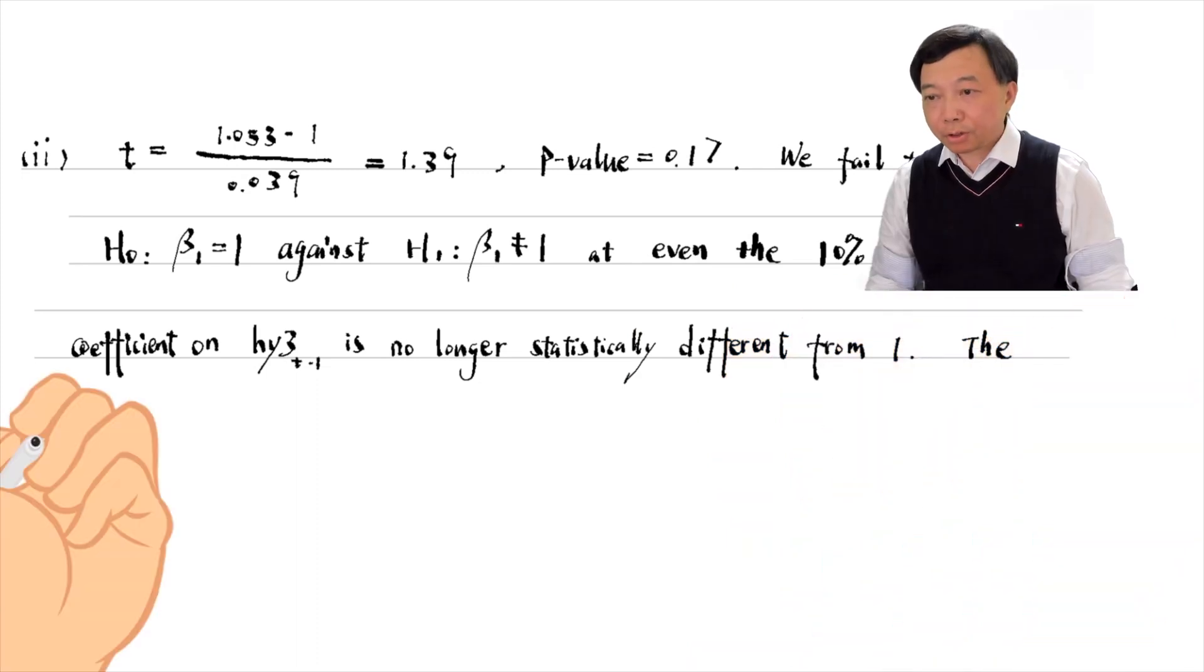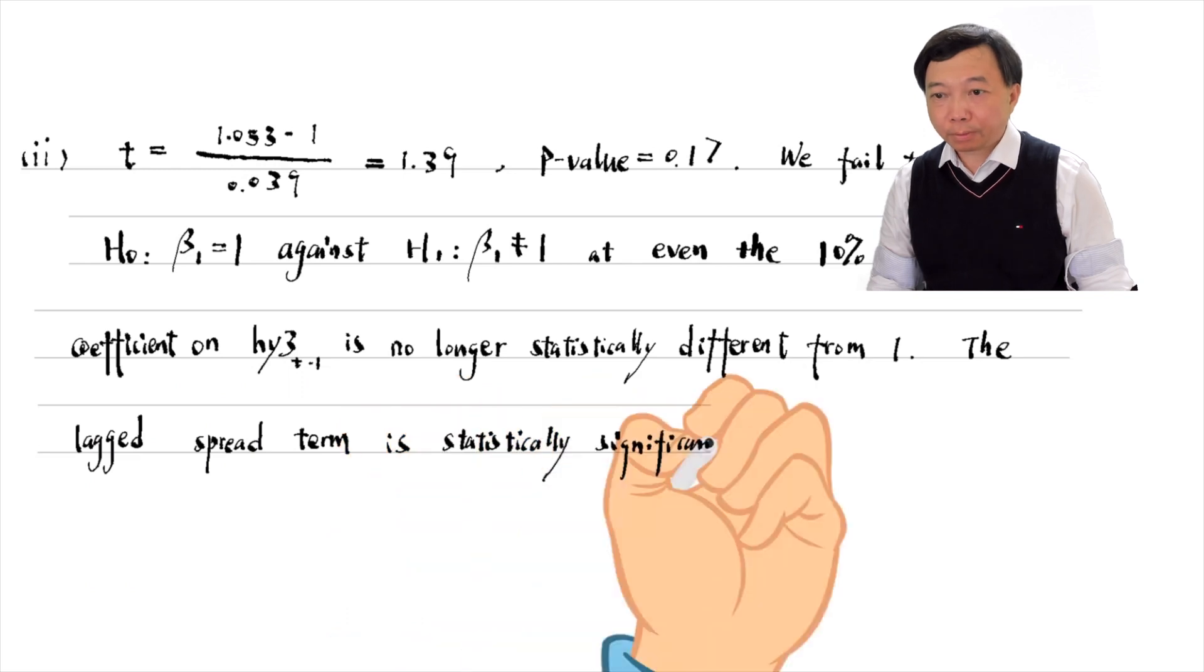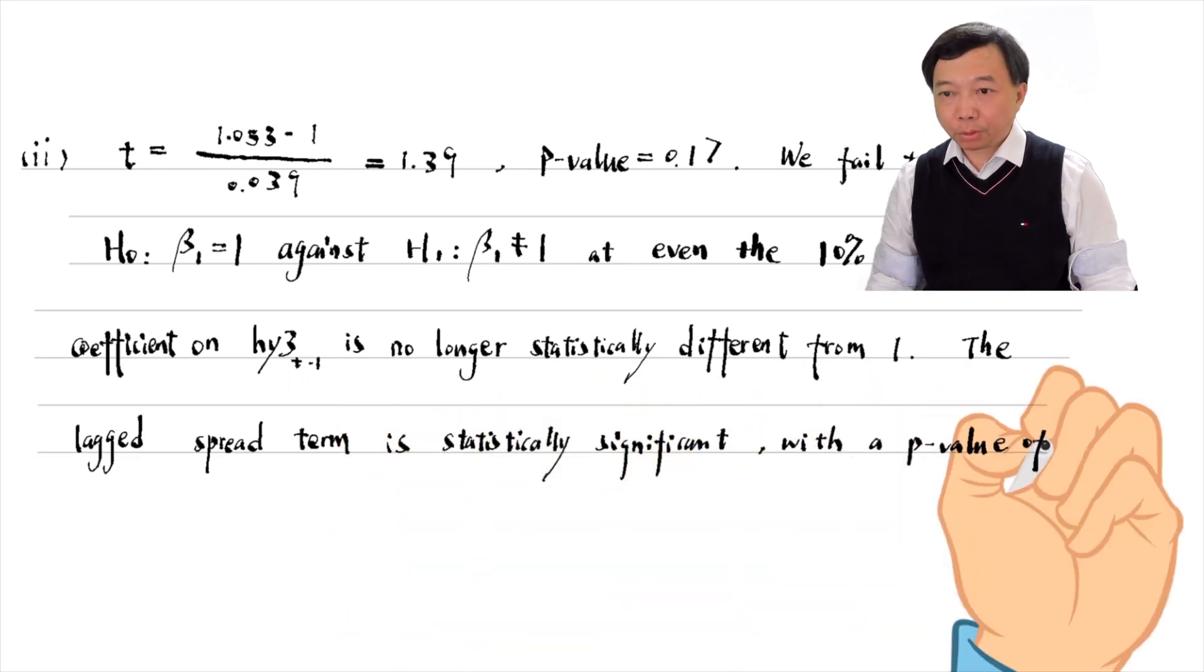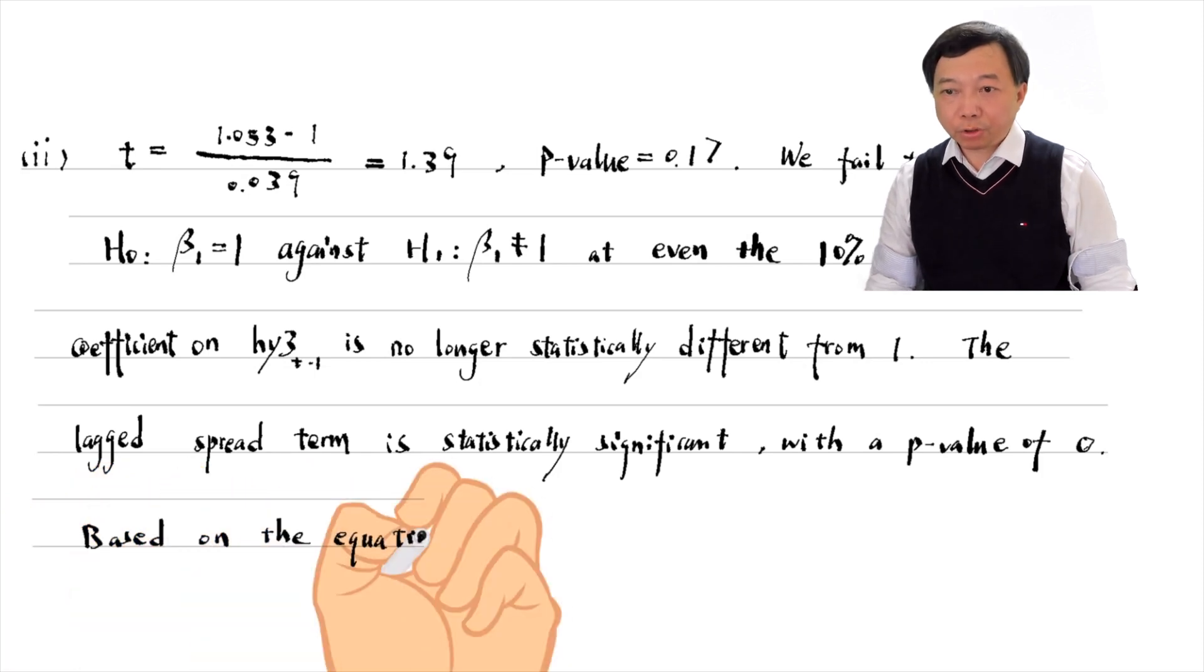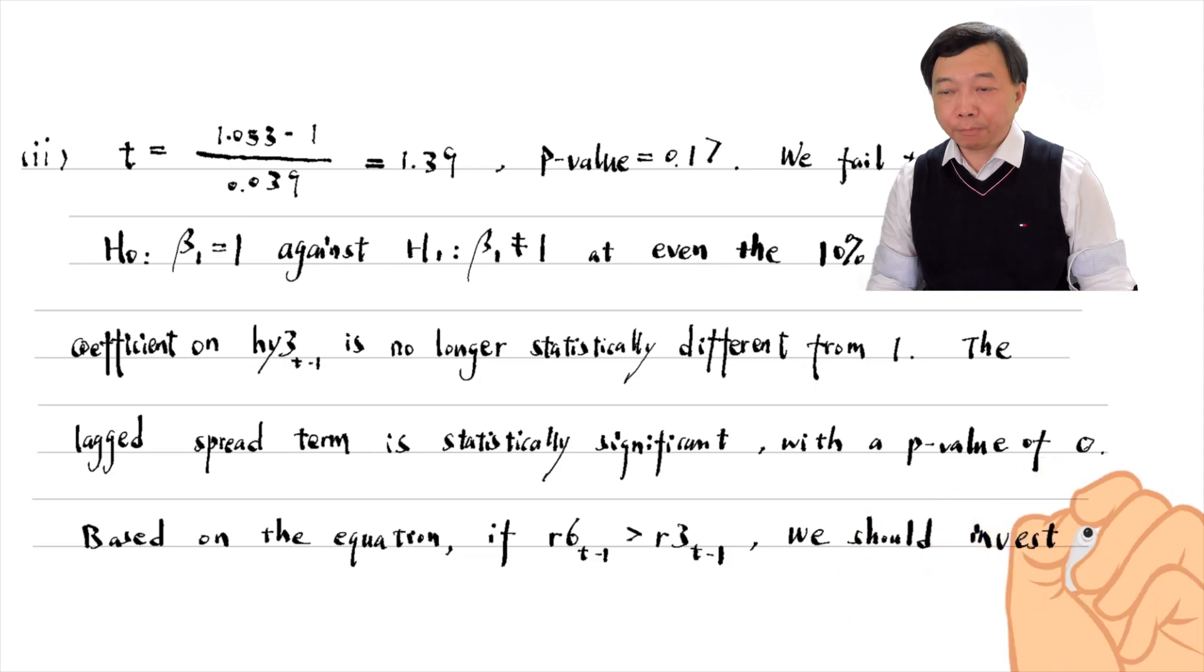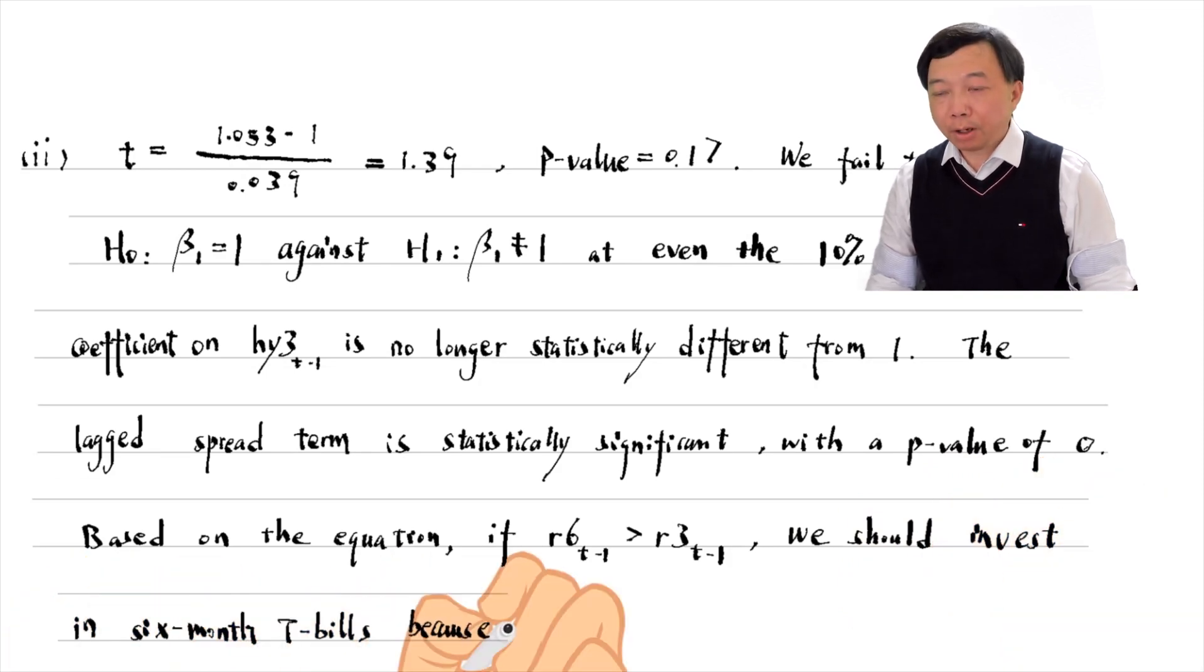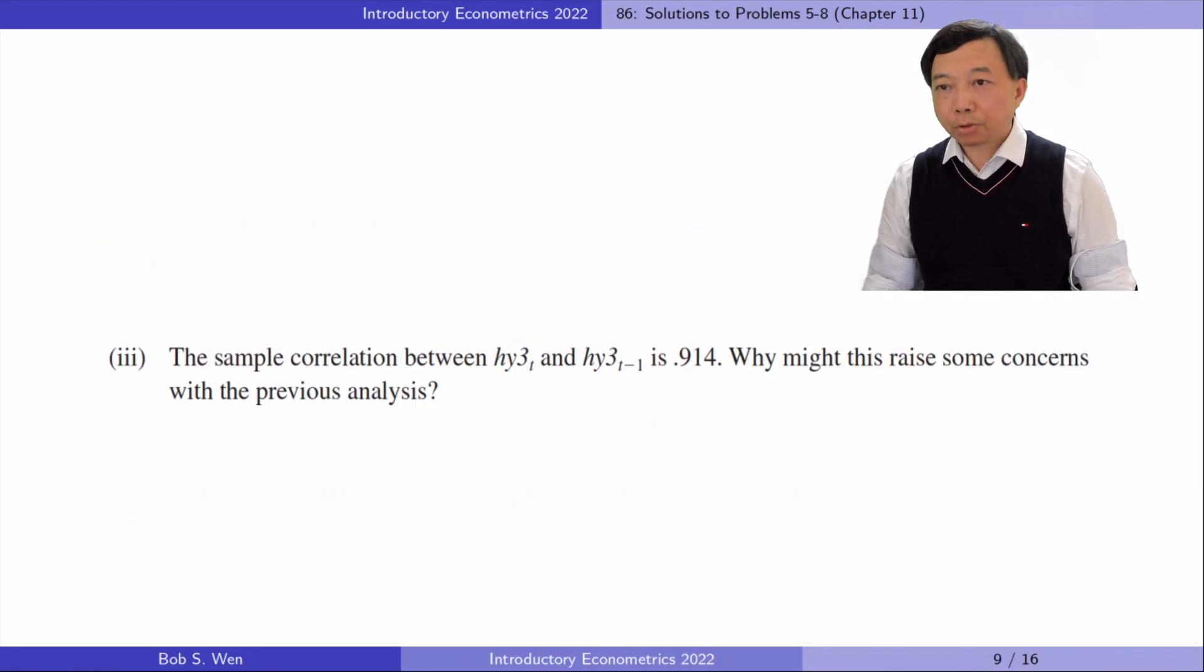The lag spread term is statistically significant, with a p-value of 0 to 3 decimal places. Based on the estimated equation, if at time t-1, r6 is above r3, we should invest in 6-month t-bills, because the expected value of 6-month t-bills is higher than the expected value of 3-month t-bills.